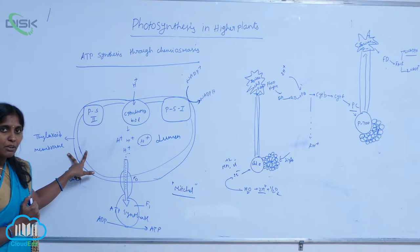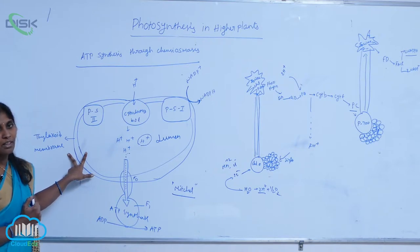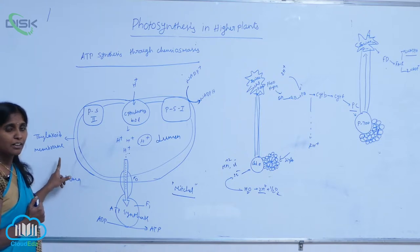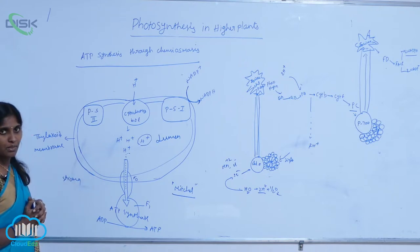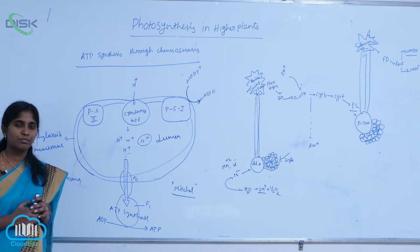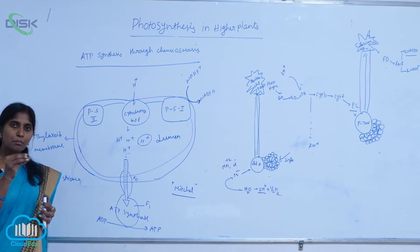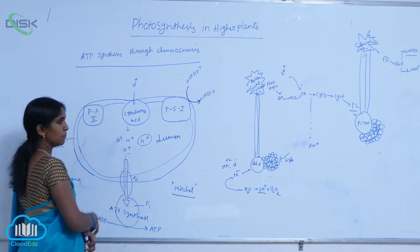Between the lumen and stroma, the thylakoid membrane works as an impermeable membrane. It is impermeable to proton entry from lumen to stroma and inhibits that movement. Therefore, there is a need for another entry — a proton channel or proton pathway.